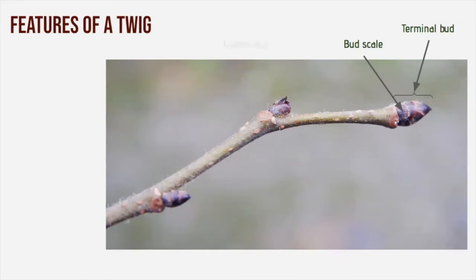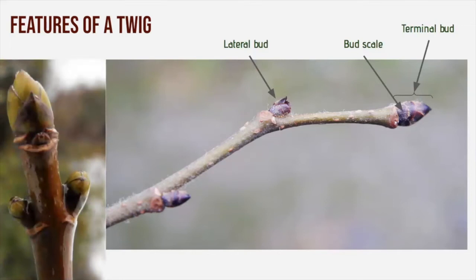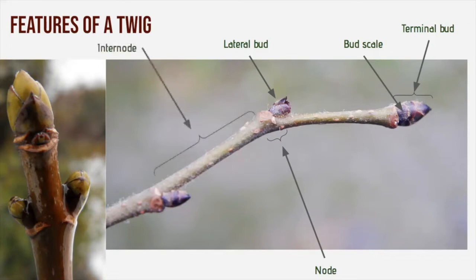Buds on the side of a twig are known as lateral buds and are either alternately located along the twig, as in this case on this witch elm, or they occur opposite, as in the case with the green buds of the sycamore. Leaves appear from an area called the node, and the section between these nodes is called the internode. Once the leaf of a deciduous tree has emerged from its bud, developed and grown through the summer months, it falls off in the autumn leaving a remnant scar.